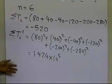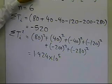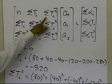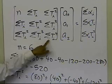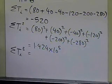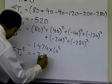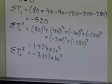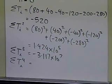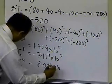Similarly, we can find the summation of ti cubed and ti to the fourth, which are also needed for the coefficient matrix. The summation of ti cubed — taking the cube of all temperatures and adding them — gives minus 3.117 times 10 to the power 7. The negative sign is because there are negative temperatures in the data. The summation of ti to the fourth power is positive, since it's an even power, and turns out to be 8.000 times 10 to the power 9. These are all the summations needed for the coefficient matrix.